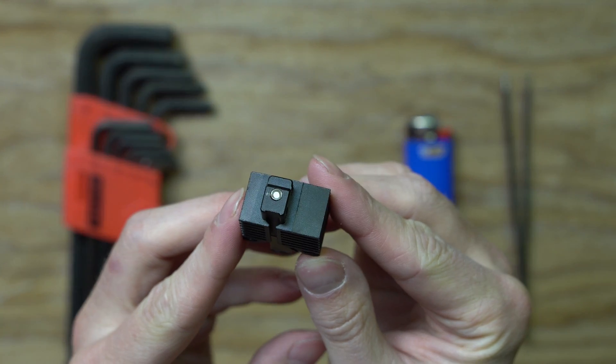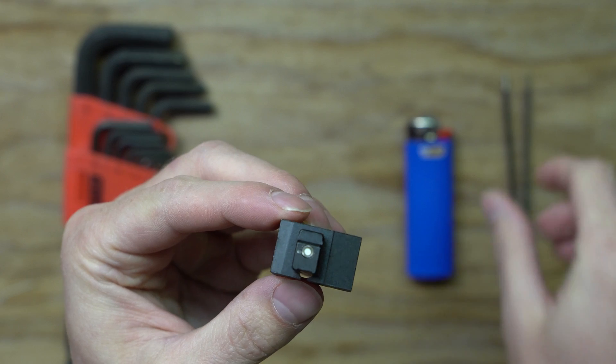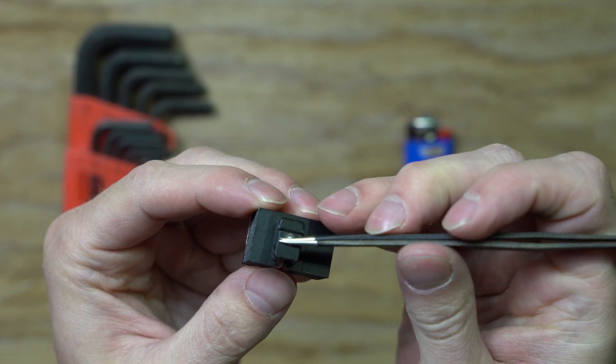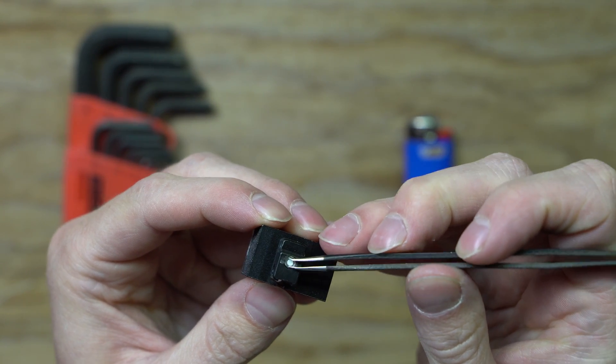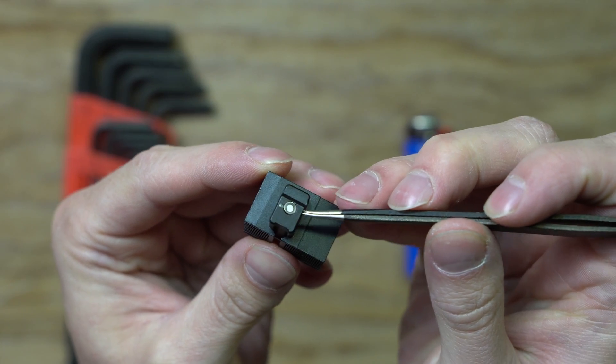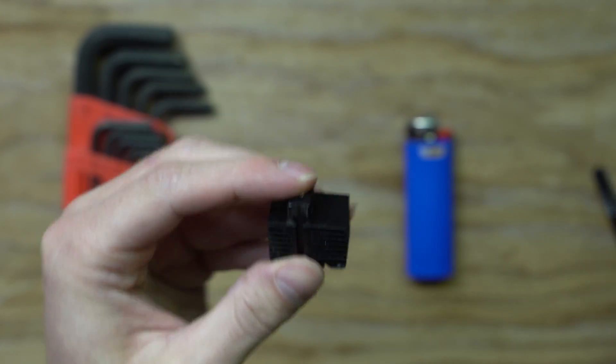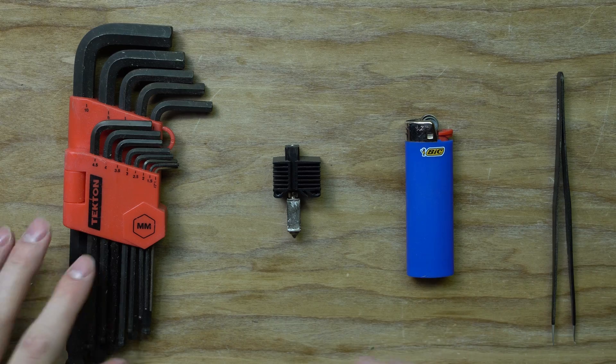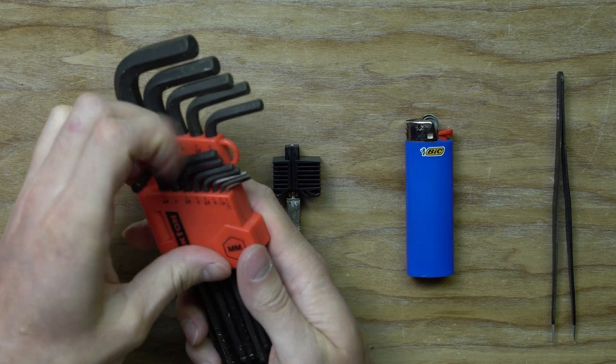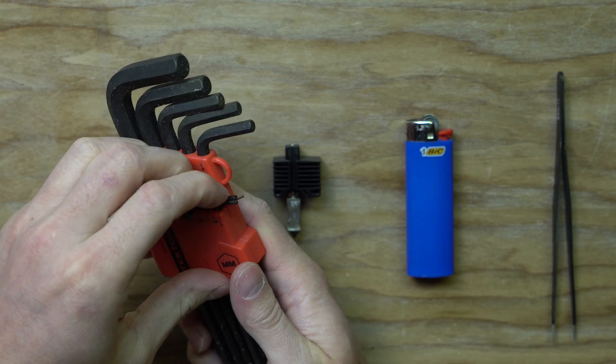You can see it at the top there and there's really nothing you can do about trying to pull it out. You can't get tweezers in there. There's no way you're going to get a grip on it, so following the Bamboo Labs guidelines, we're going to heat a 1.5 millimeter hex key.